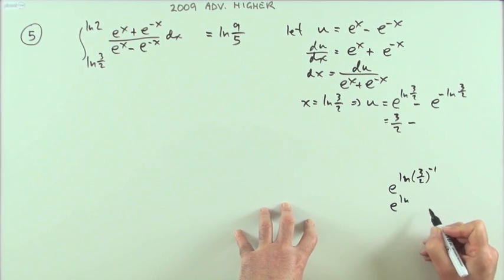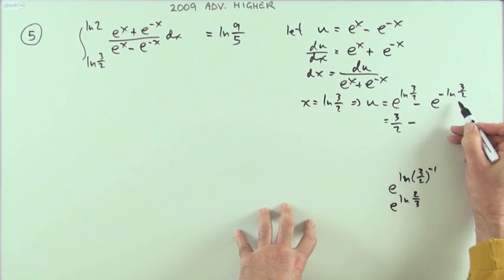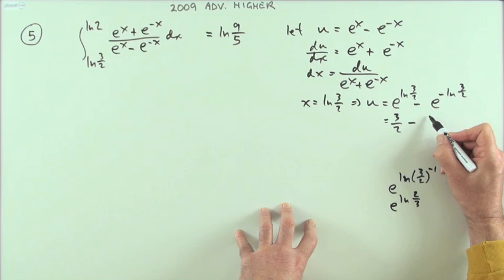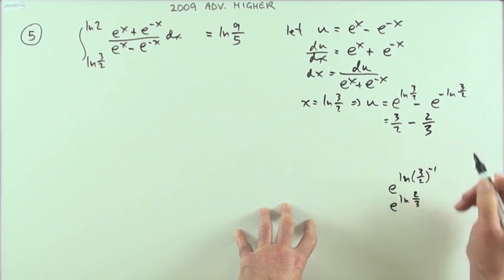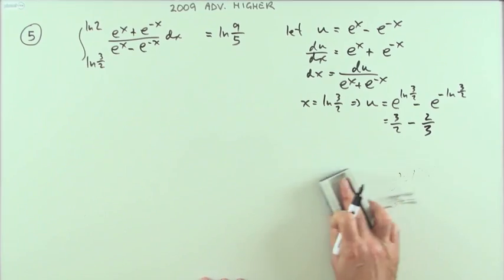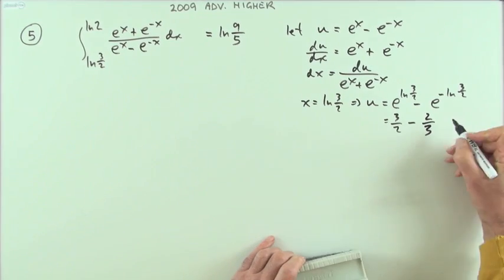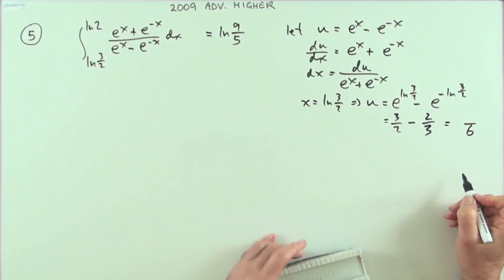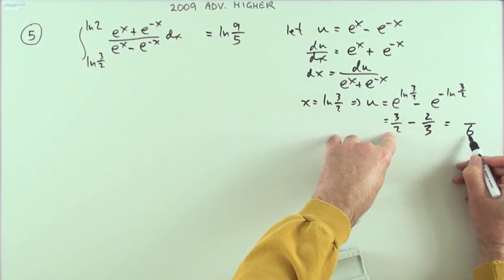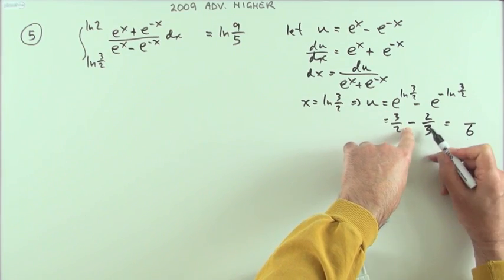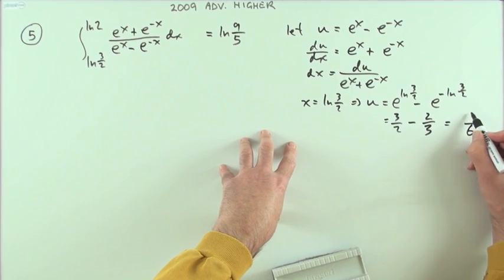So that part would be e^(ln(2/3)) which is 2/3, and I'll just tidy that up because I've got sixths all together. And I've got 9/6 - 4/6 which is 5/6. That actually took a little bit of working.